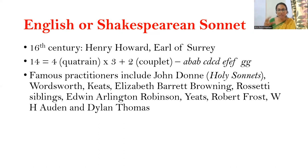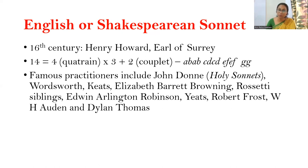As you can see, ABAB makes the first quatrain, CDCD makes the second quatrain, EFEF makes the third quatrain, and the concluding couplet follows the rhyme scheme GG. Famous practitioners of the Shakespearean sonnet include John Donne, William Wordsworth, John Keats, Elizabeth Barrett Browning, the Rossetti siblings, Edwin Arlington Robinson, W.B. Yeats, Robert Frost, W.H. Auden, and Dylan Thomas.